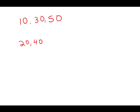When we add those three up, we get 90, and 90 divided by 3 is 30. Now, this average, 30, is 5 more than the average of 20, 40, and the missing number. So those numbers have an average of 25.